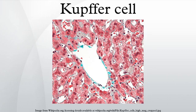Kupffer cells, also known as Browicz-Kupffer cells and stellate macrophages, are specialized macrophages located in the liver lining the walls of the sinusoids that form part of the reticuloendothelial system.